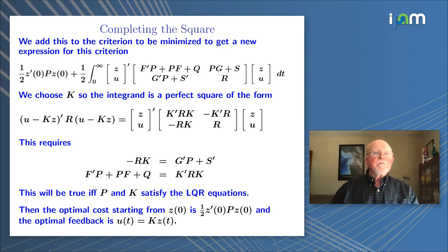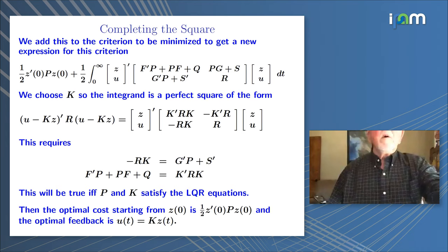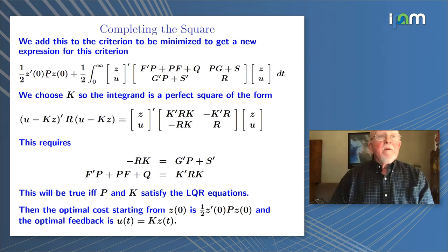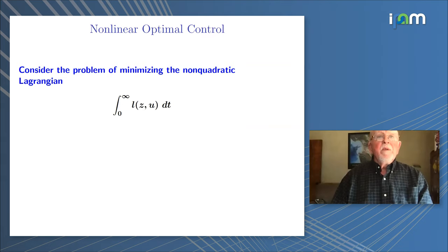The optimal cost starting from Z0 is one-half Z0-transpose PZ0, and the optimal feedback is U equals K of T. If we complete the square in this fashion, then this integrand is zero, so the criteria to be minimized is fully determined — there's no variable to minimize over, which guarantees it's the optimal cost. Now let's turn to a nonlinear problem.